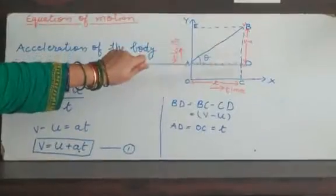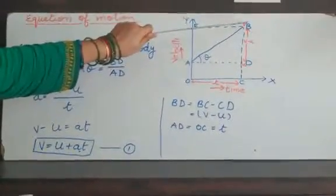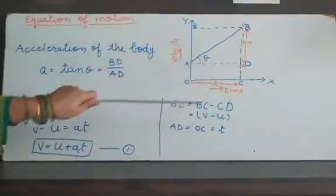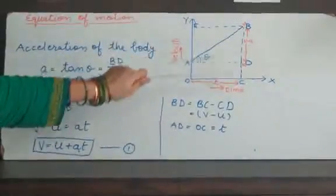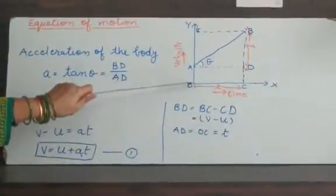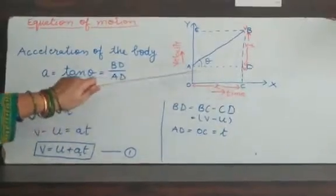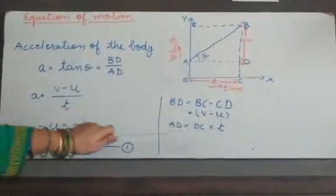Suppose initial velocity was U and final velocity V. So, total BD will be BC minus CD. BC minus CD means it will be V minus U. And total time taken means OC, already equal to AD, will be equal to T.